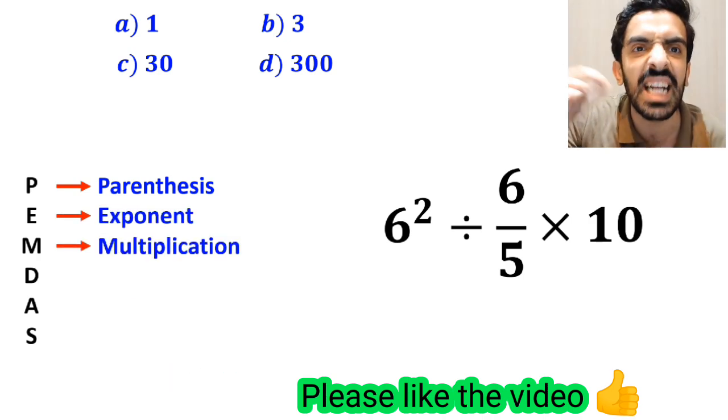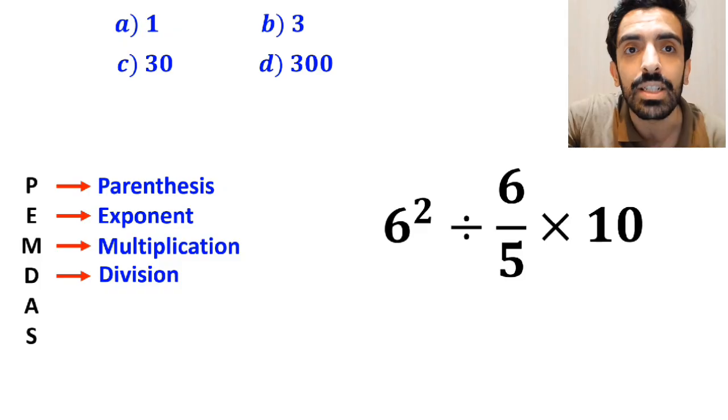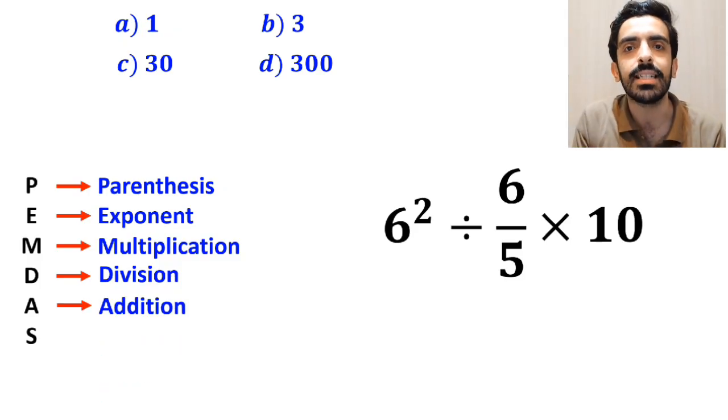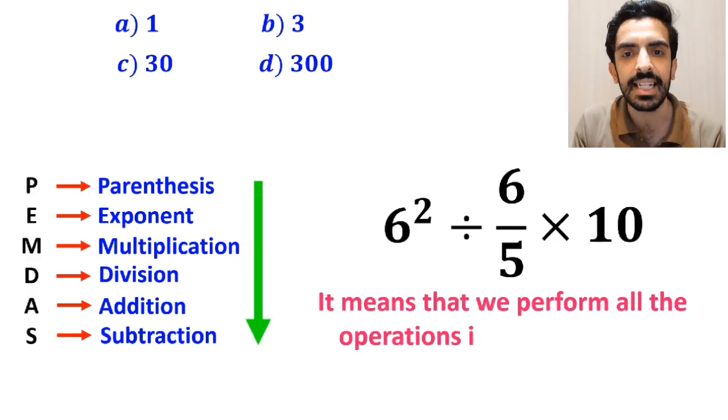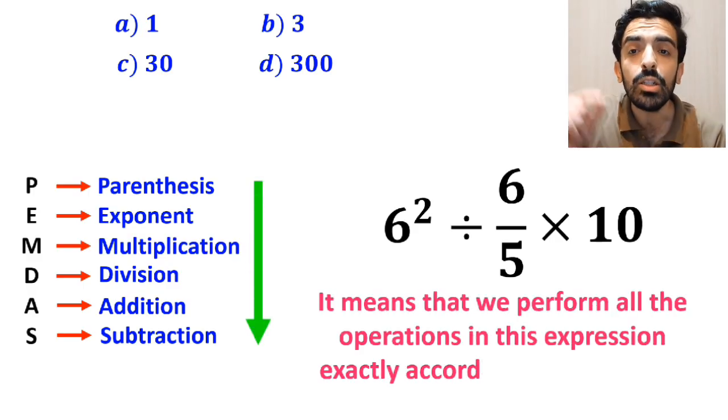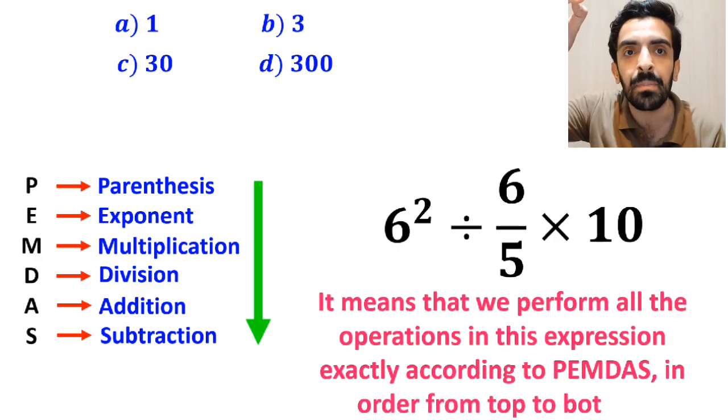M stands for multiplication, D stands for division, A stands for addition, and S stands for subtraction. It means that we perform all the operations in this expression exactly according to the PEMDAS rule in order from top to bottom.